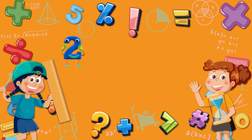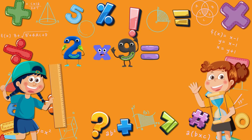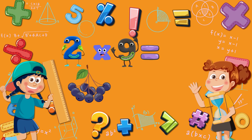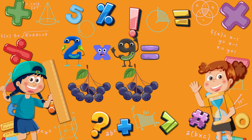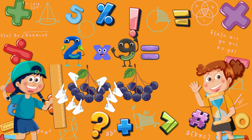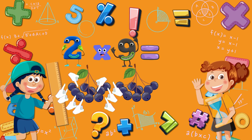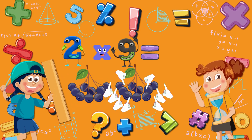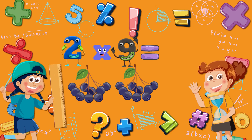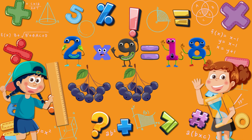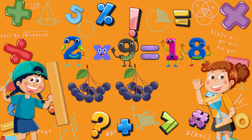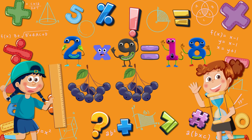Two times nine is equal to? Two branches, each with nine blueberries. Nine blueberries on the first branch, and nine on the second branch. Nine plus nine is equal to eighteen. Great. Two times nine is equal to eighteen.